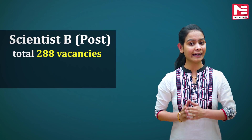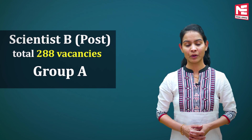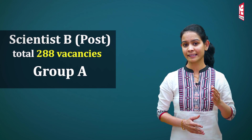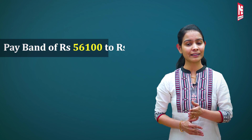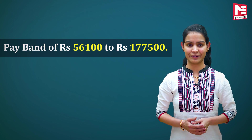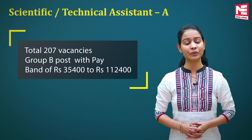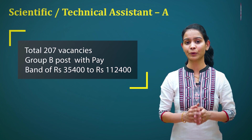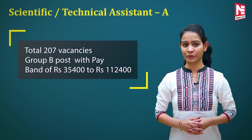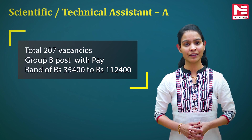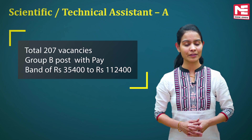Sabse pehle jaante hain number of vacancies. Scientist B post ki total 288 vacancies hain. This is a Group A post with a pay band of rupees 56,100 to 1,77,500. Scientific Technical Assistant A ki total 207 vacancies hain. This is a Group B post with a pay band of rupees 35,400 to 1,12,400.